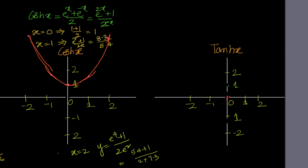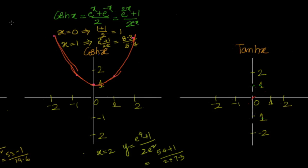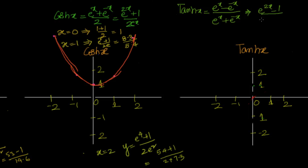Now let us move to hyperbolic tangent. The definition of tanh(x) equals sinh(x) divided by cosh(x), which is e^x minus e^(-x) divided by e^x plus e^(-x). The 2s cancel out. This simplifies to e^(2x) minus 1 divided by e^(2x) plus 1. If x equals 0, we get 1 minus 1 divided by something, which is 0. So x equals 0 gives y equals 0.